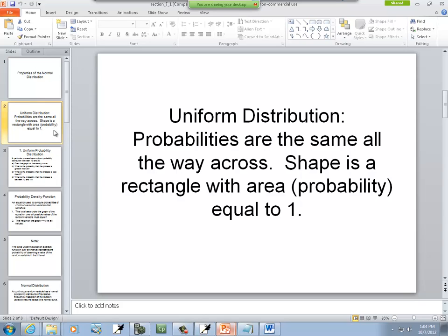Now the first thing they throw in here really has nothing to do with the normal distribution. Normal distribution is your bell shape. But it's an important topic, but it's not enough to fill an entire section. So they kind of throw it in where it doesn't seem to quite fit. Uniform distribution. Probabilities are the same all the way across. Shape is a rectangle with area equal to 1. And area is the same as probability for these.